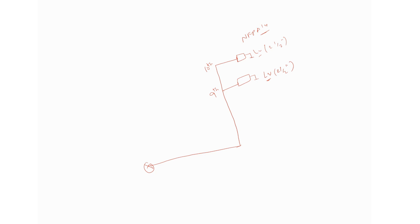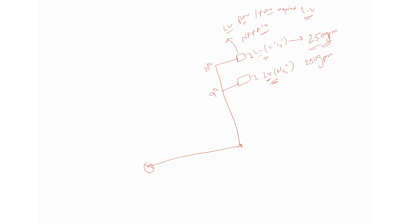There are two key points to remember. First point is related to flow from each landing valve, and second point is related to the pressure required at each landing valve. As I told in my previous slide, for 2.5-inch hose or landing valves we need to have 250 GPM as per NFPA 14. Since we are considering two landing valves, our calculation demand will be 250 GPM plus 250 GPM, which equals 500 GPM.